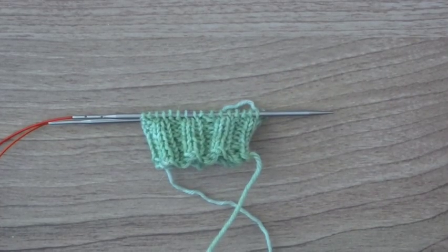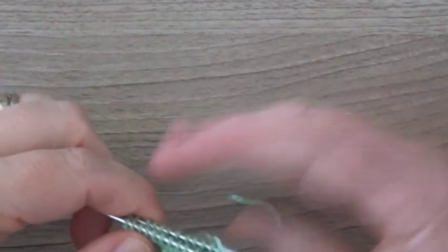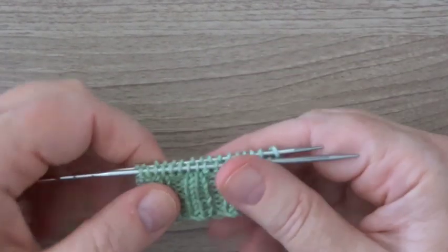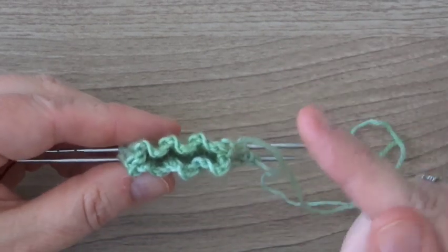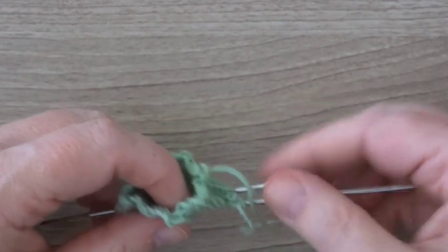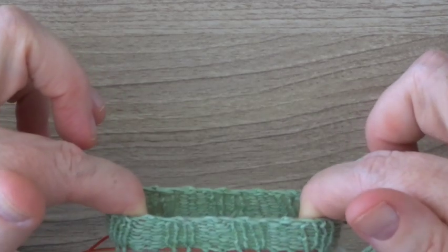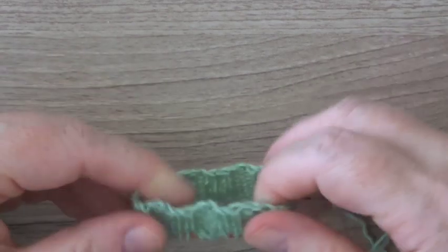I've knitted a few rounds to show you what the cast-on looks like. It's just a simple knit-two, purl-two pattern, but if you look at the top of your sock, it's really nice and it's also really stretchy. So I hope you like this cast-on and happy knitting!